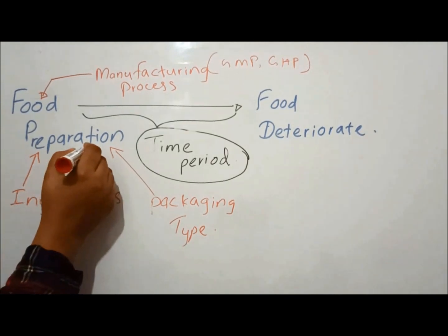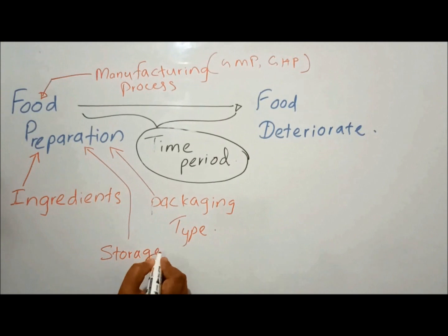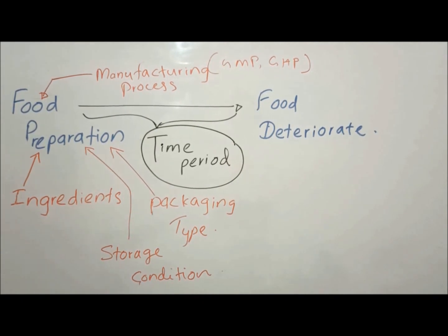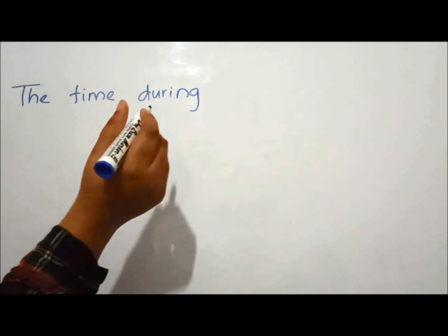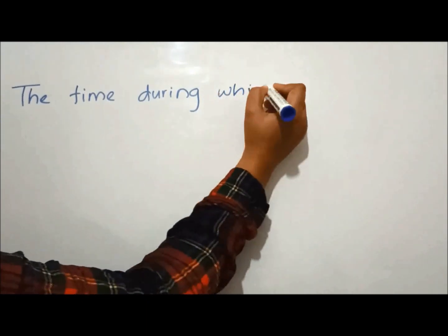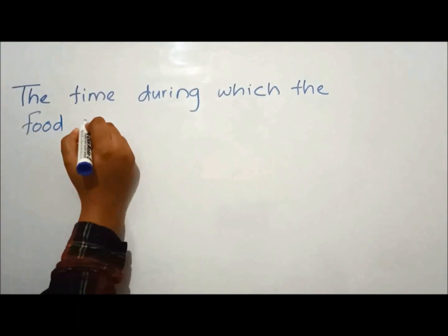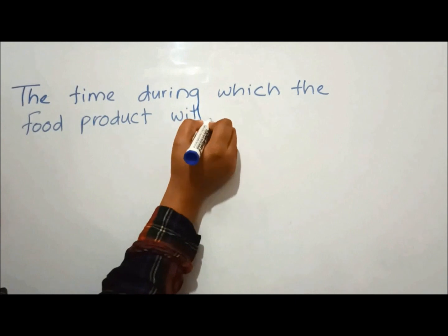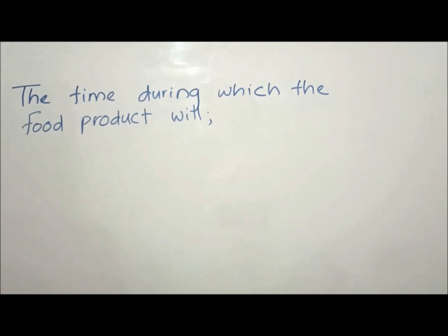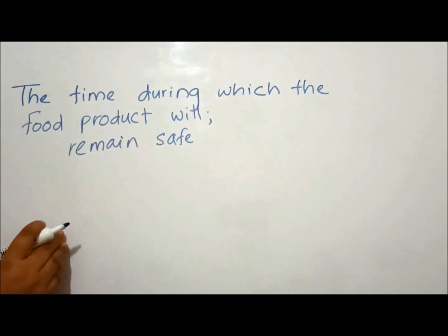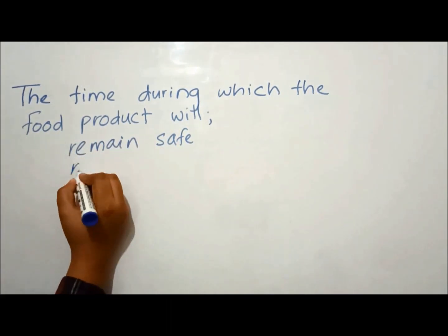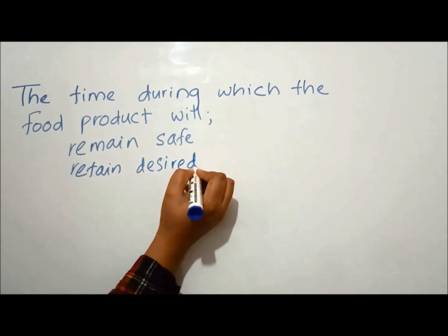Another factor is how the food is stored. Shelf life is defined as the time during which the food product will remain safe, and be certain to retain desired sensory, chemical, physical and microbiological characteristics.